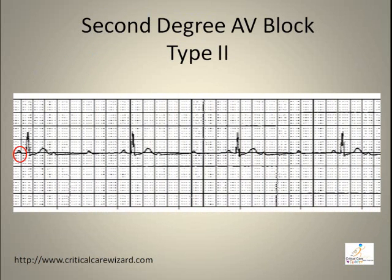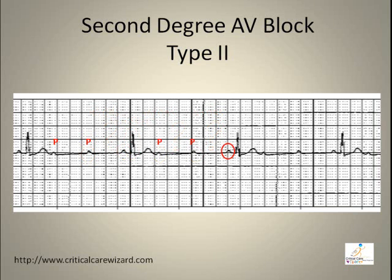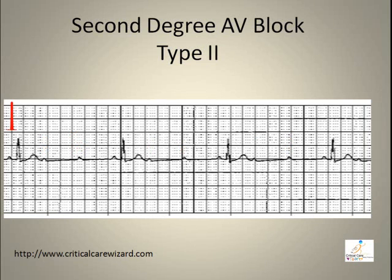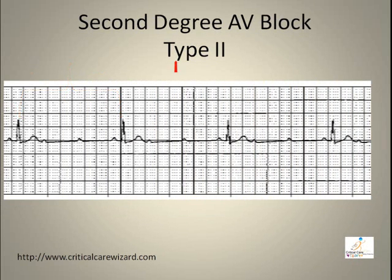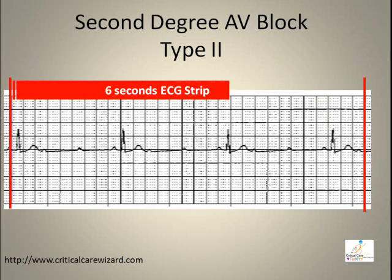In second degree AV block Type II, the P-wave is present but some are not followed by a QRS. The PR interval is constant. The rhythm may appear regular, but the atrial rate and ventricular rate are not the same.